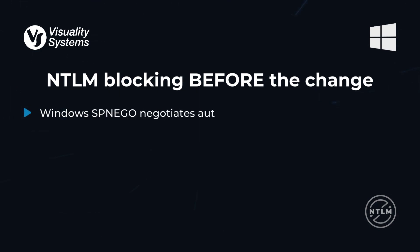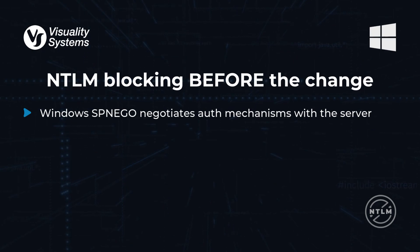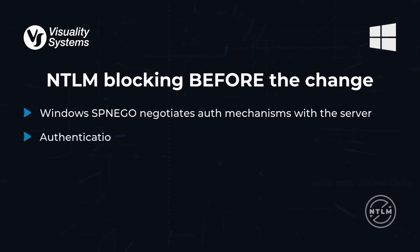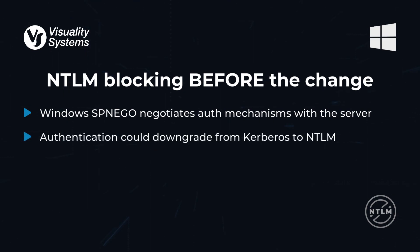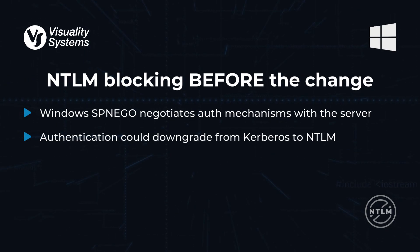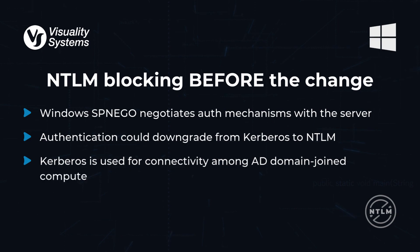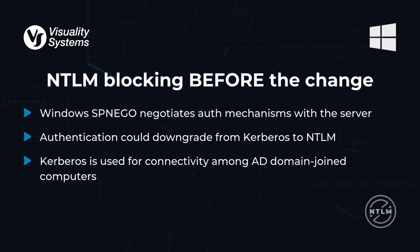Before NTLM blocking, Windows used the SPNEGO protocol to negotiate between different authentication mechanisms, including Kerberos and NTLM, depending on the server and client setup. In some cases, this negotiation could result in a downgrade from Kerberos to NTLM, which weakened the overall security. However, for Active Directory domain-joined computers, Kerberos was still the default method for authentication and connectivity, while an option to disable NTLM was added with Windows Server 2008.